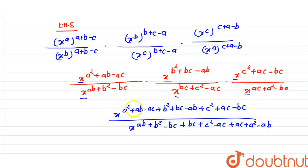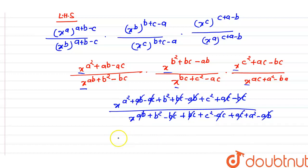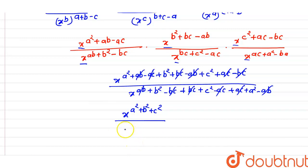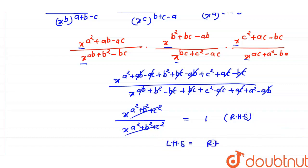Now we can see that in the numerator, ac cancels with −ac, ab cancels with −ab, and bc cancels with −bc, leaving x^(a²+b²+c²). Similarly in the denominator, ab, bc, and ac all cancel out, also leaving x^(a²+b²+c²). Since numerator equals denominator, they cancel and the result is 1, which equals the right hand side. Therefore, LHS = RHS.